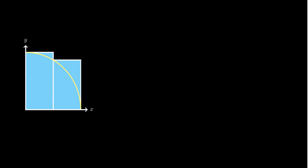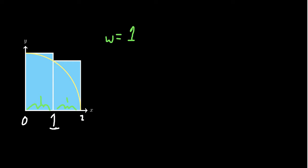One approach is to approximate the area of this quarter circle using rectangles, since we can calculate the area of rectangles. We'll use two rectangles going from 0 to 2, breaking it up at 0, 1, and 2. The width of each rectangle equals 1.